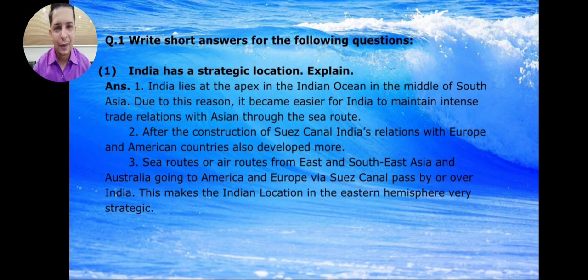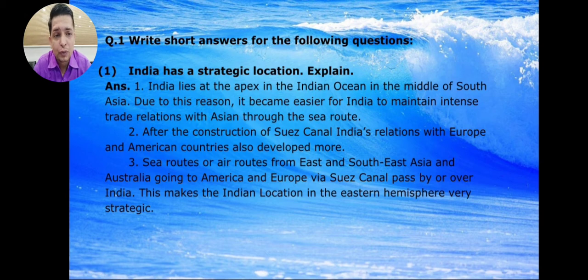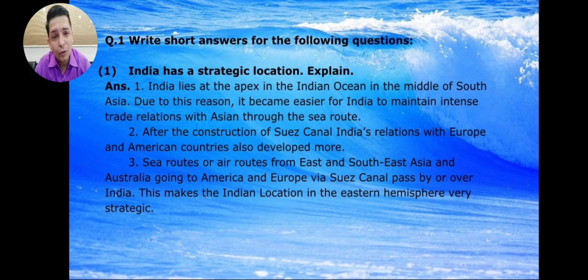Point number 3: Sea routes or air routes from East and South East Asia and Australia going to America and Europe via the Suez Canal pass by or over India. This makes India's location very strategic.